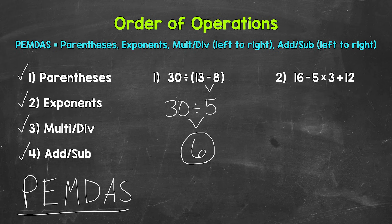For number one, we worked through the order of operations. We started with parentheses, then brought down everything we did not use, and ended with 30 divided by 5, which gave us 6. Let's move on to number two, where we have 16 minus 5 times 3 plus 12.